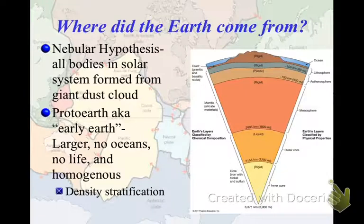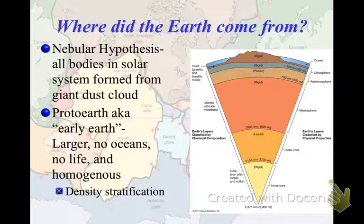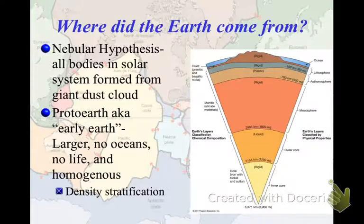Before we talk about plate tectonics we should back up and make sure we're on the same page with where the Earth came from. The nebular hypothesis is the notion that everything in the solar system used to be in a giant rotating dust cloud, full of hydrogen and helium. The sun eventually shrank down — it probably extended all the way out to the edges of Jupiter — and as it shrank it left behind planet-sized blobs of dust. One of those blobs was the Earth. This early proto-Earth eventually solidified; it was a little bigger than it is now, had no oceans or life, and was homogeneous — basically the same material throughout.